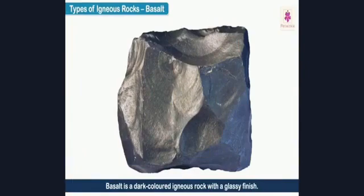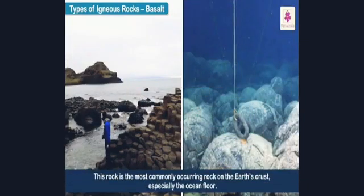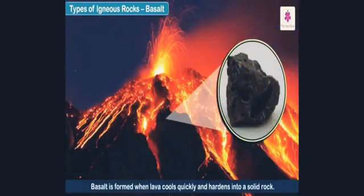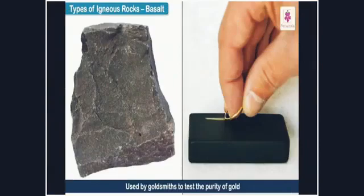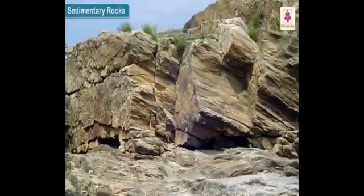Basalt is a dark-colored igneous rock with a glassy finish. It is the most commonly occurring rock on the earth's crust, especially the ocean floor. Basalt is formed when lava cools quickly and hardens into a solid rock. It is commonly used in construction to add strength and is also used by goldsmiths to test the purity of gold.